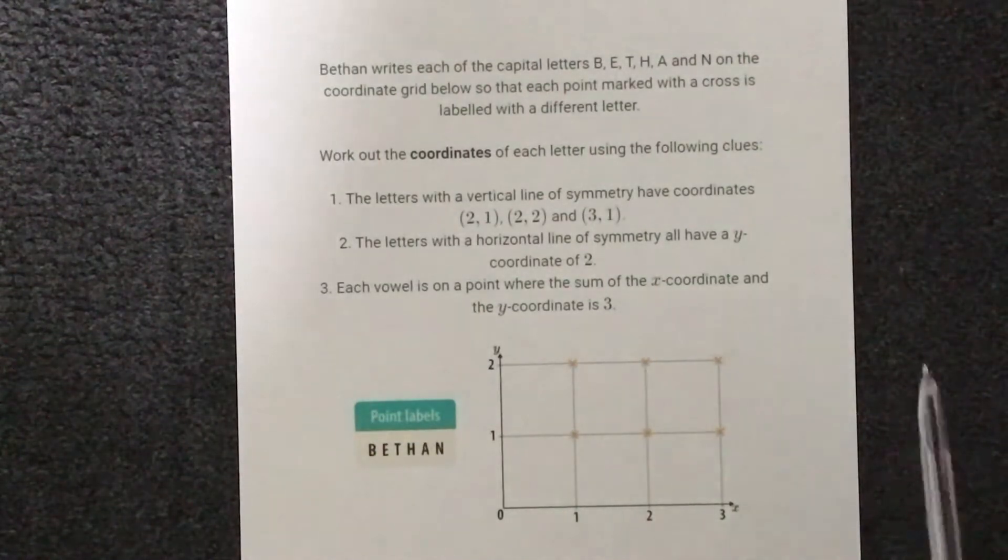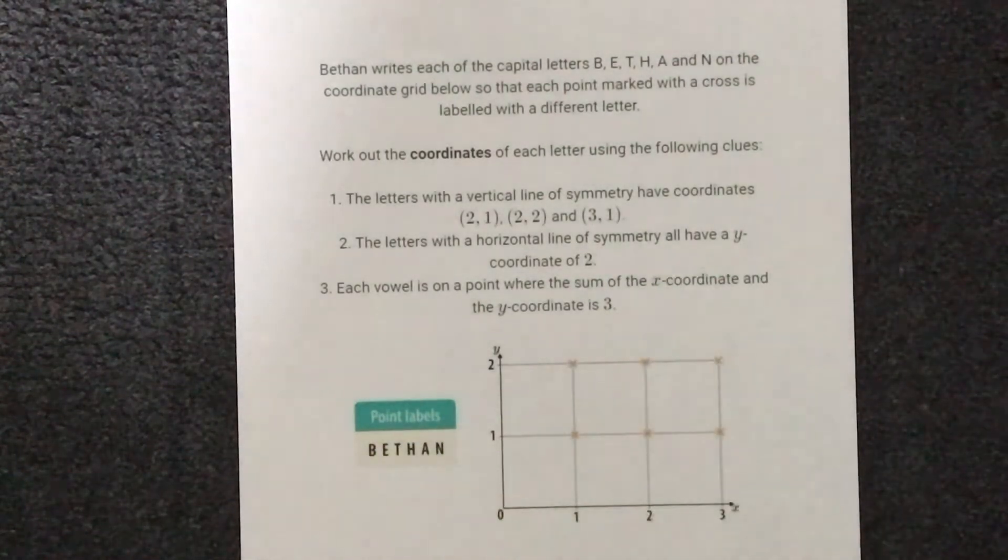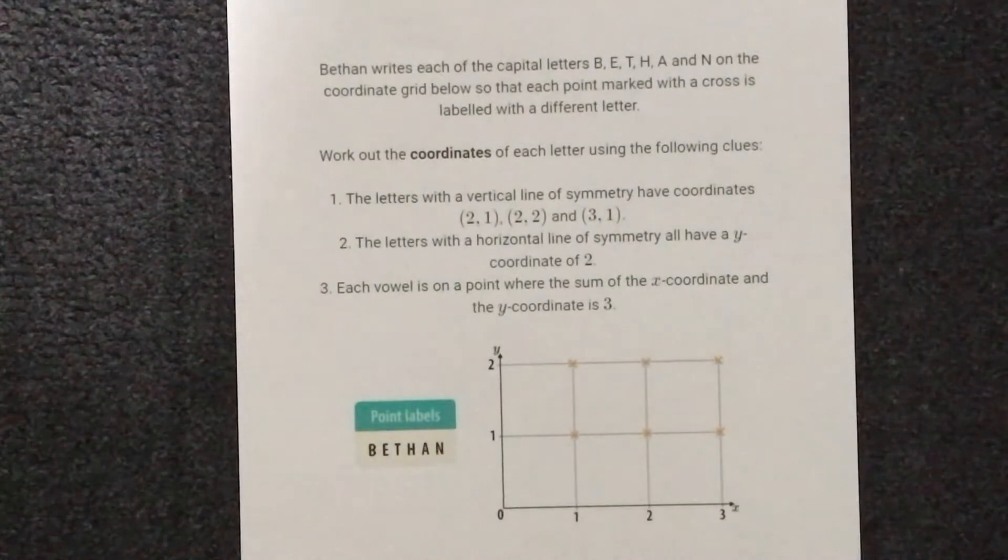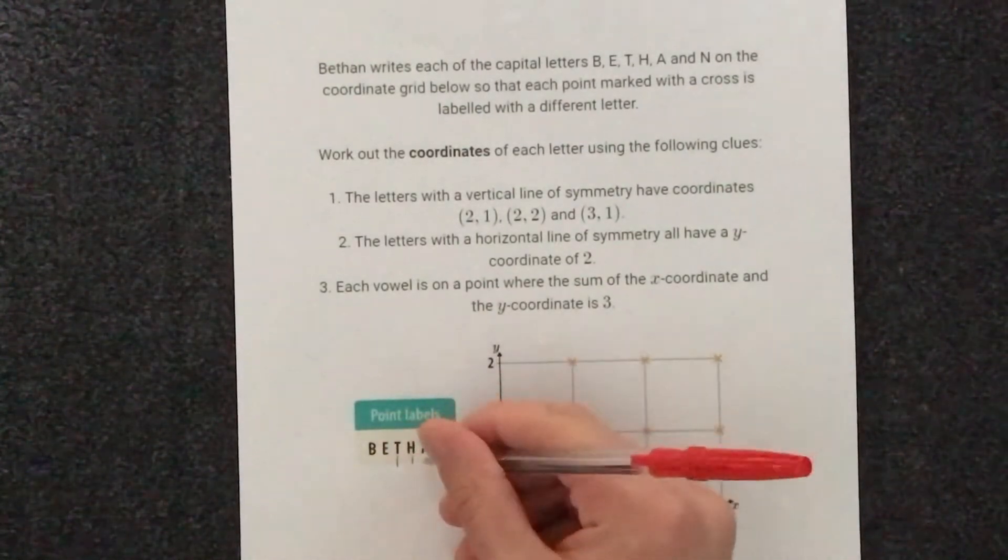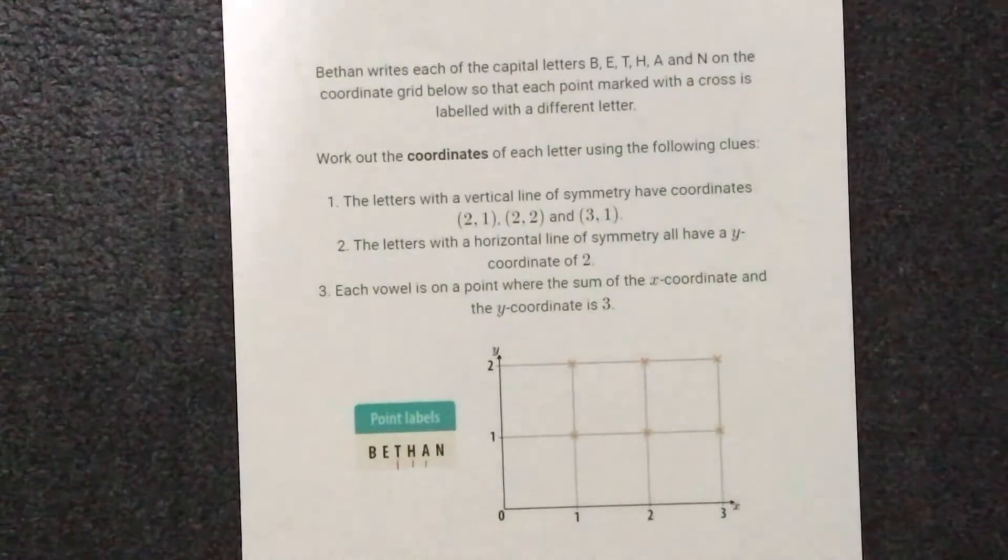So our first clue: the letters with a vertical line of symmetry have the coordinates (2,1), (2,2) and (3,1). So which of our letters have vertical lines of symmetry? Well that's going to be T, H and A. So they can go in these three points.